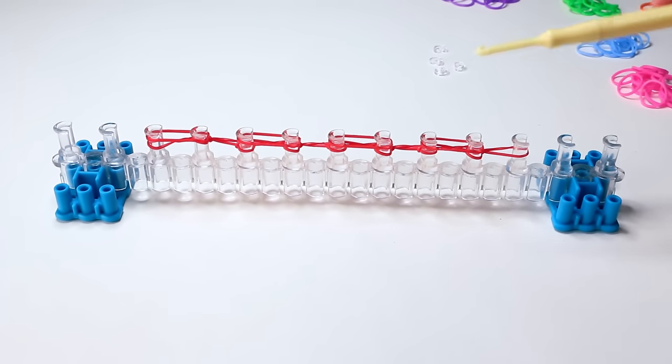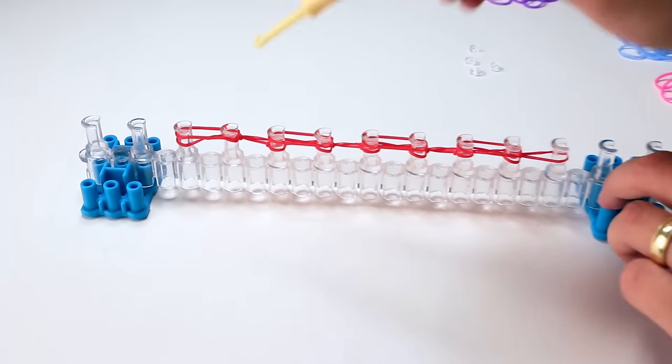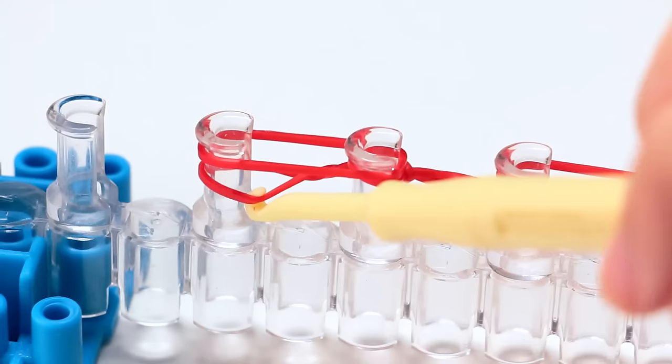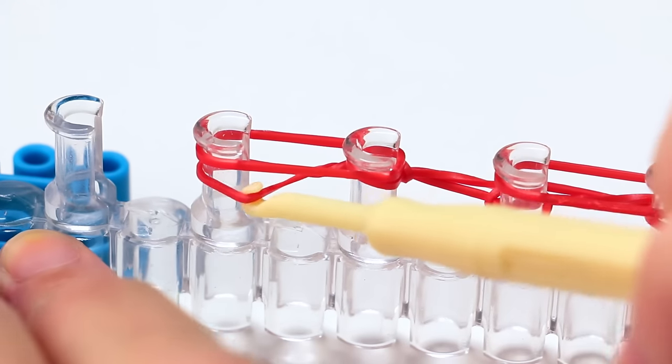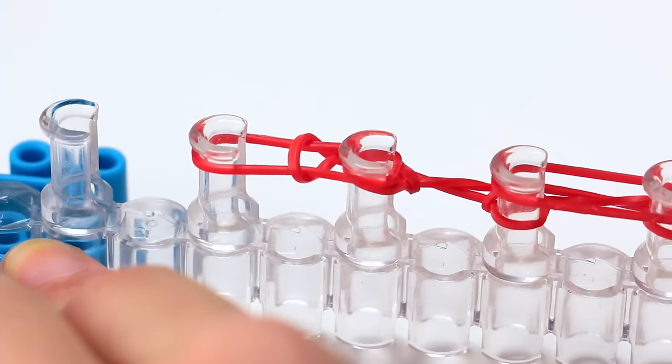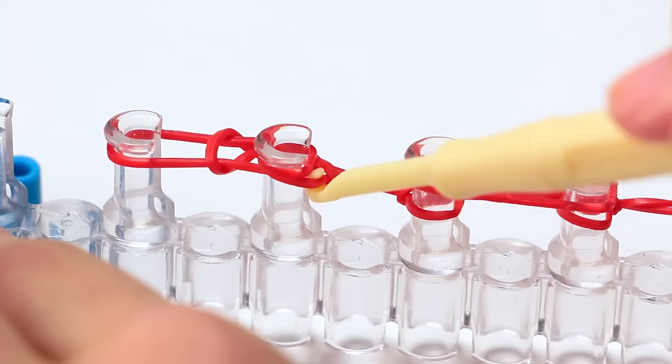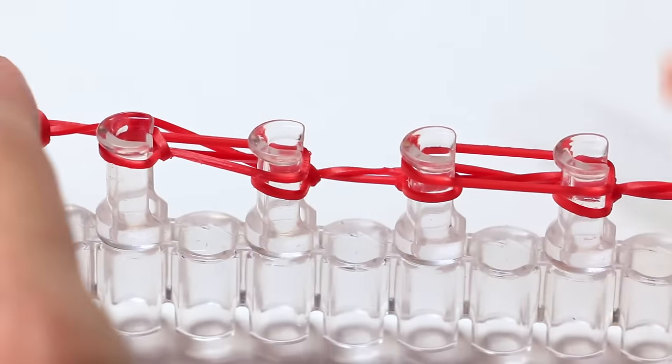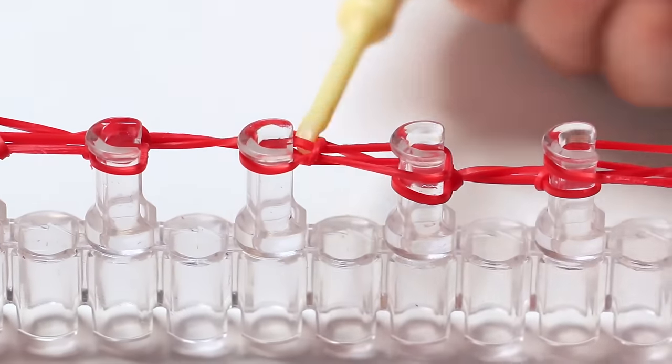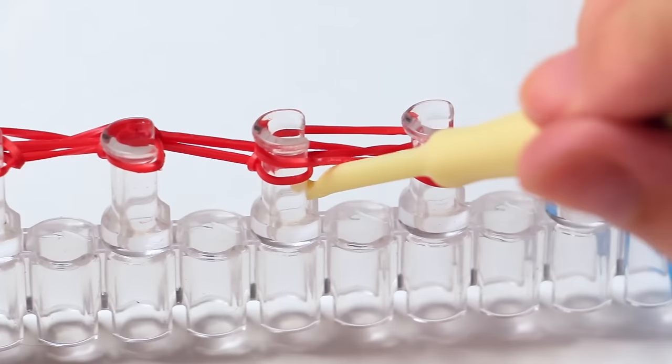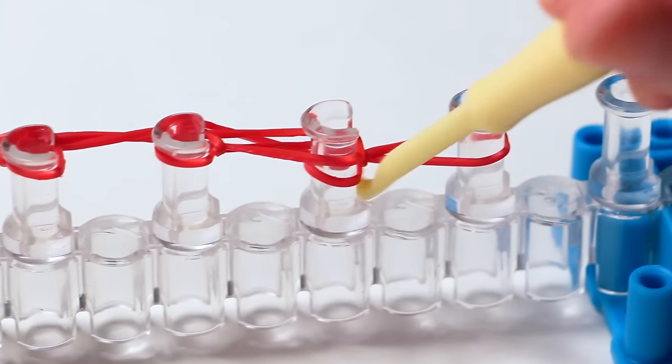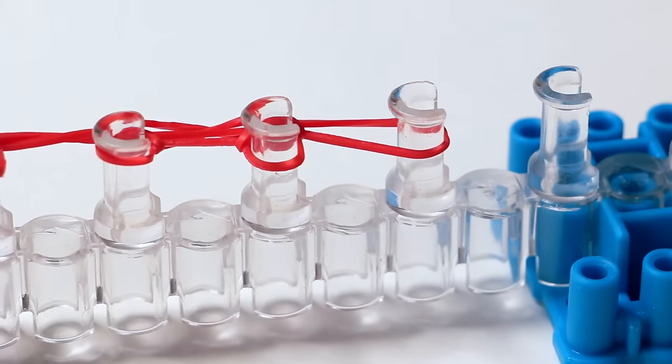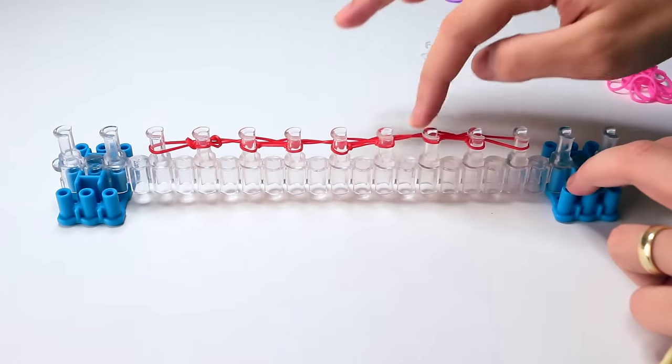Now we'll start to hook again. Grab your hook and stick to the same rule I mentioned earlier. Every pin that has two bands on it, grab the bottom band with your hook and hook it over the top of the pin. Continue to do this until you reach the end of the row. As you can see, on the very last pin there's only one band, so make sure you skip that one. Now push down the bands again.